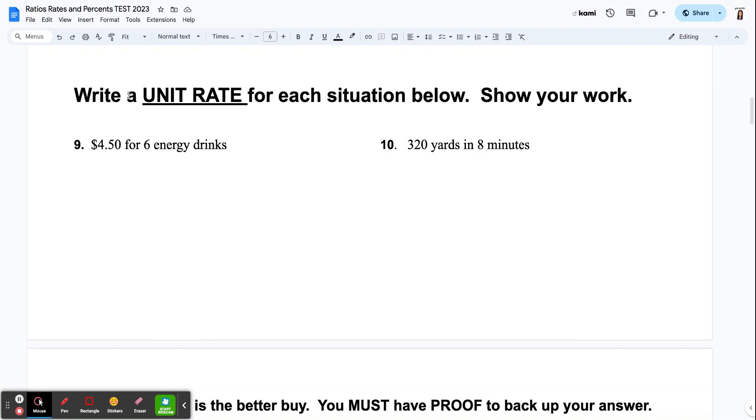For the next section, kids tend to make oopsies on this part, so make sure you're reading carefully. You're going to write a unit rate for each situation below and show your work. So I'm not asking you to just rewrite this. Some kids do that. I don't want to see what it looks like as a rate because technically it already is.